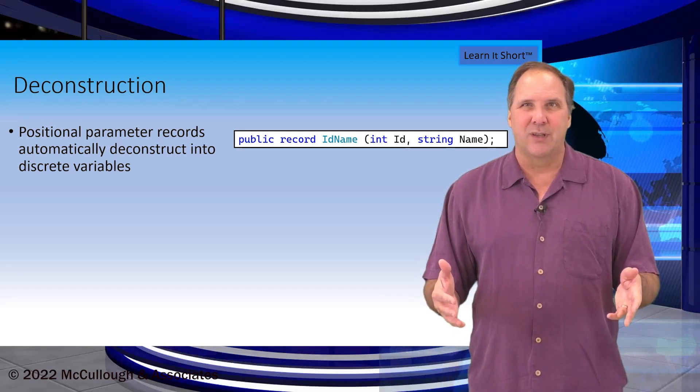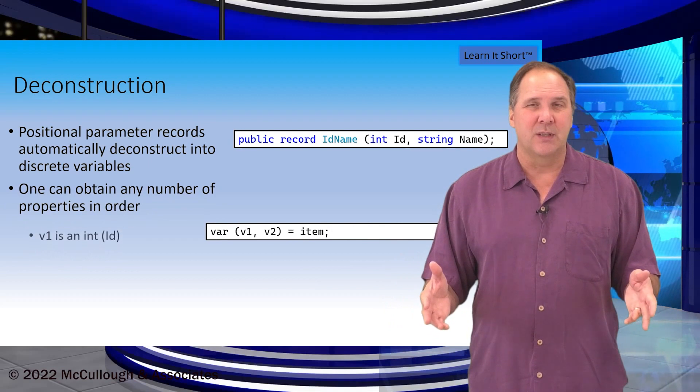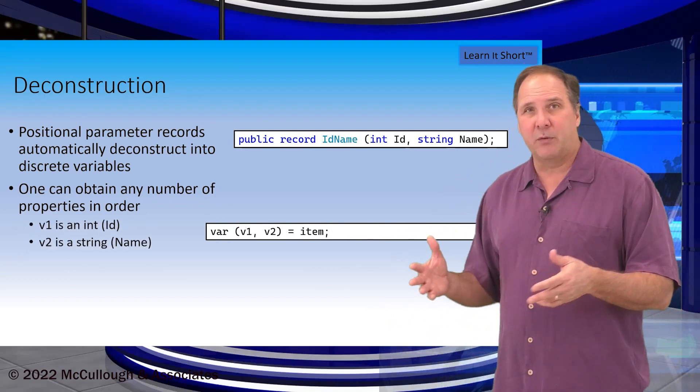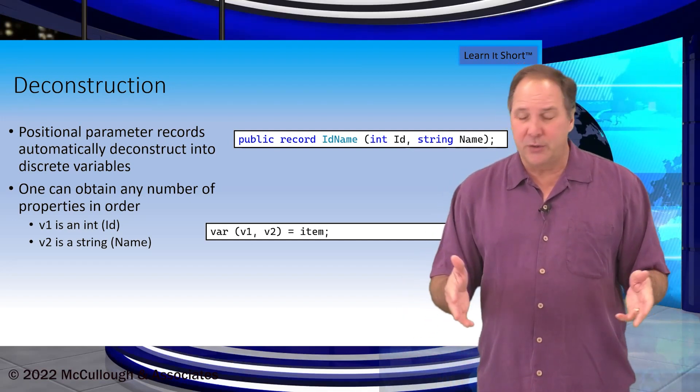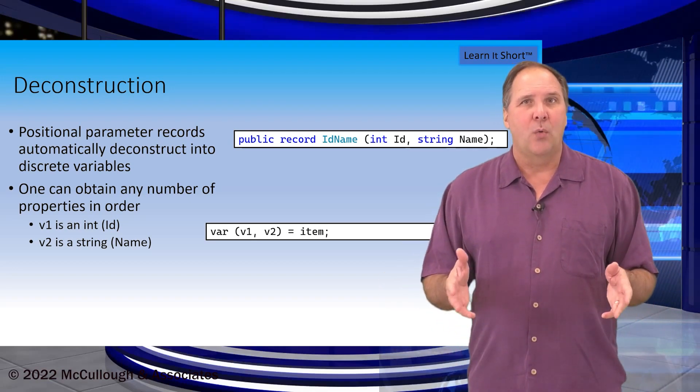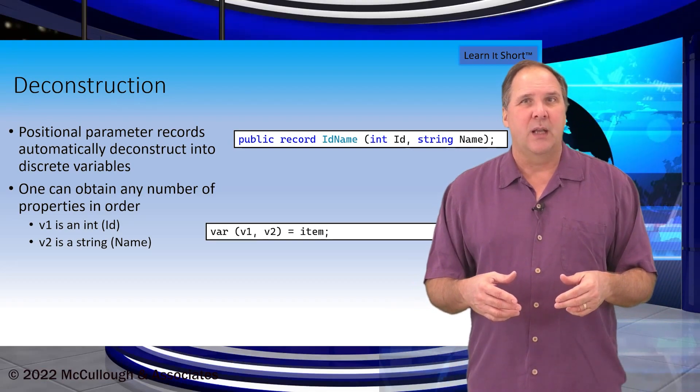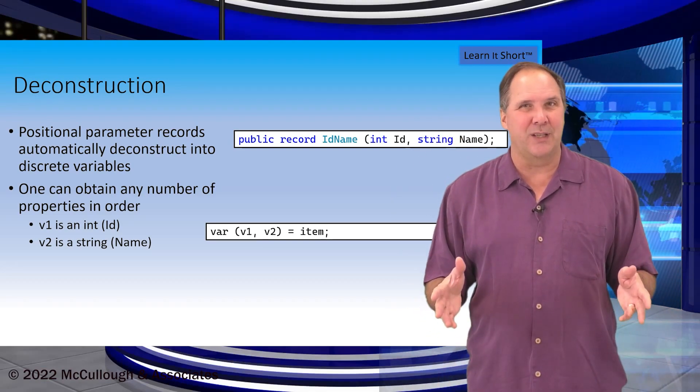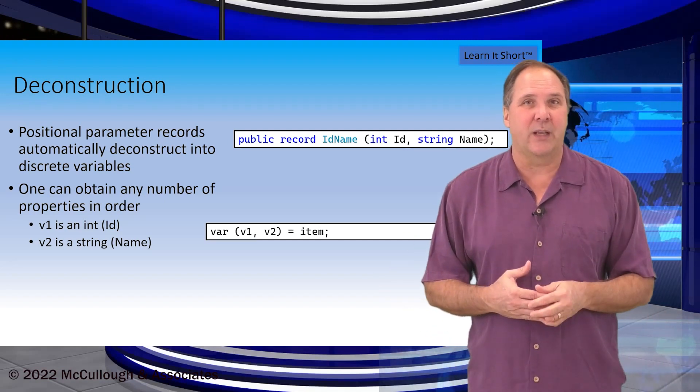Using deconstruction a programmer can obtain any number of properties in the order in which they are declared. In this example v1 is an int containing id and v2 is the string containing name. We can also implement explicit deconstructors in our records and our classes and you can take a look at my video on deconstruction which is also a new feature by clicking on the link above.